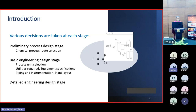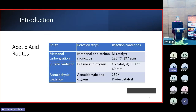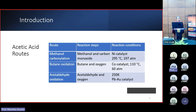If we consider what we mean by a chemical process route or path, we can consider it as the raw materials and the sequence of reaction steps involved in converting the raw material to a final useful product. Acetic acid is a very useful substance. I have shown here three possible routes to produce acetic acid: the methanol carbonylation process, the butane oxidation process, and the acetaldehyde oxidation process.